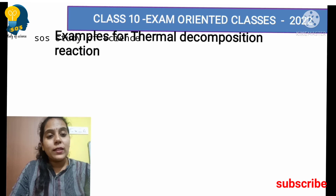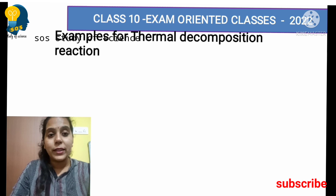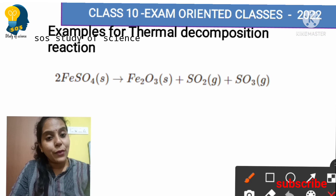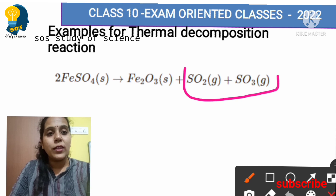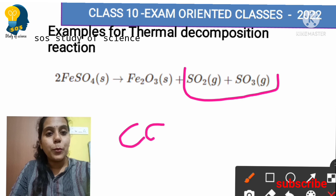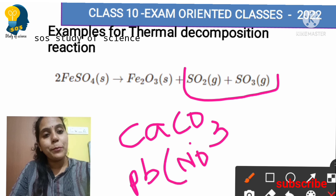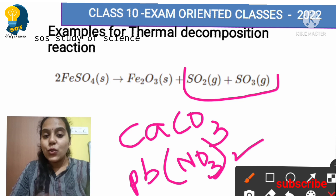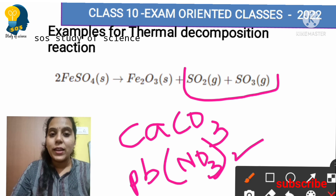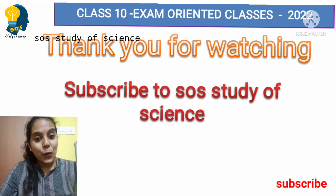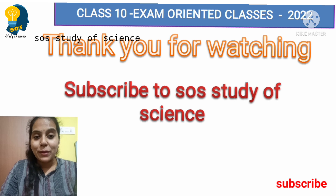Thermal decomposition reaction is very important. Heating ferrous sulfate gives ferric oxide, sulfur dioxide and sulfur trioxide — these two are poisonous gases. Heating calcium carbonate and also heating lead nitrate are also examples of thermal decomposition reaction. The products and balancing are very important. Chemical Reactions and Equations will definitely give 4–5 marks. Do subscribe to my channel and share the video with your friends. Thank you for watching and supporting. See you in the next video.